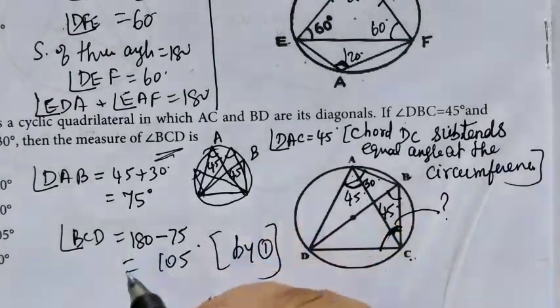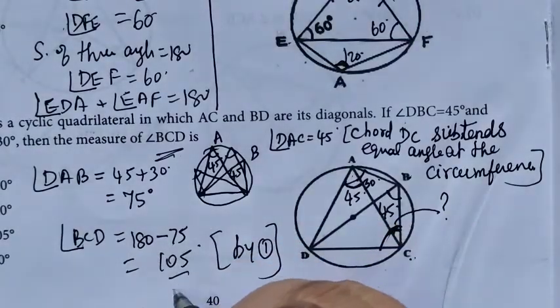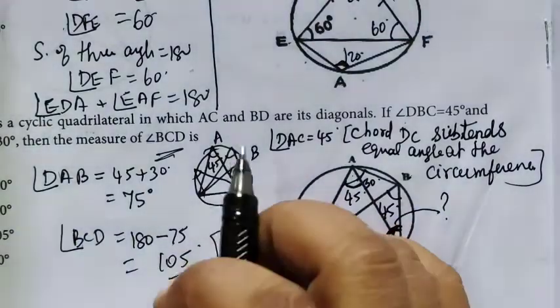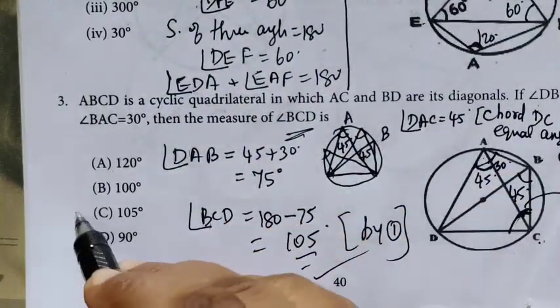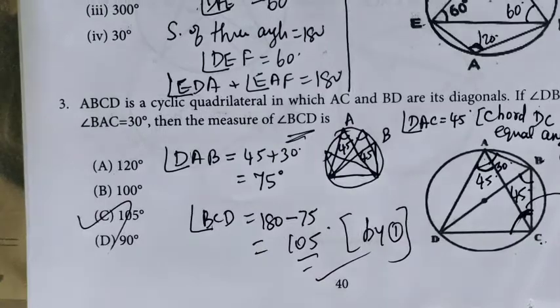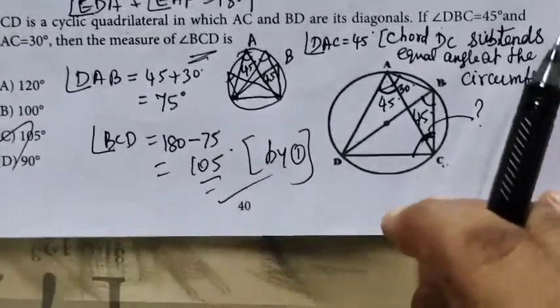This is a cyclic quadrilateral, so by the property that the sum of opposite angles is 180 degrees, the answer is 105. That is the correct one.